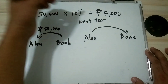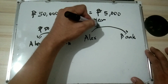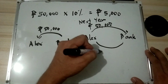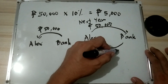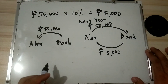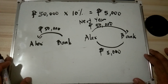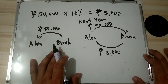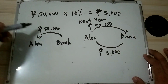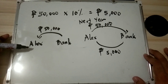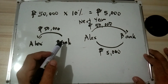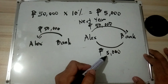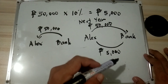Next year, Alex pays back 50,000 plus the interest of 5,000 pesos. This is the idea of interest — paying for the use of the money. The 50,000 here is what we call the principal. Alex is the borrower and the bank is the lender. After a year, the 5,000 pesos is what we call interest.